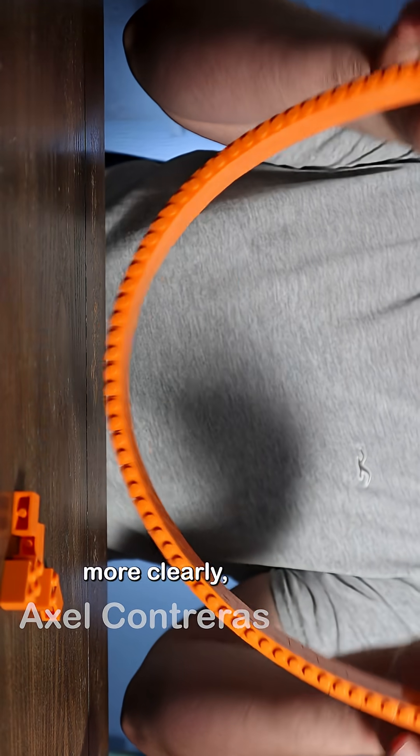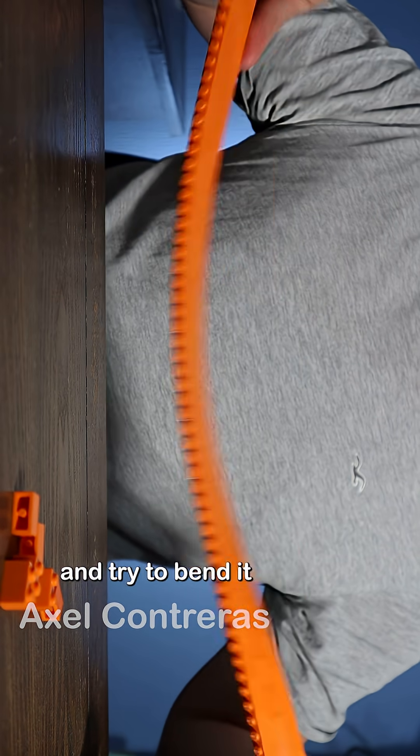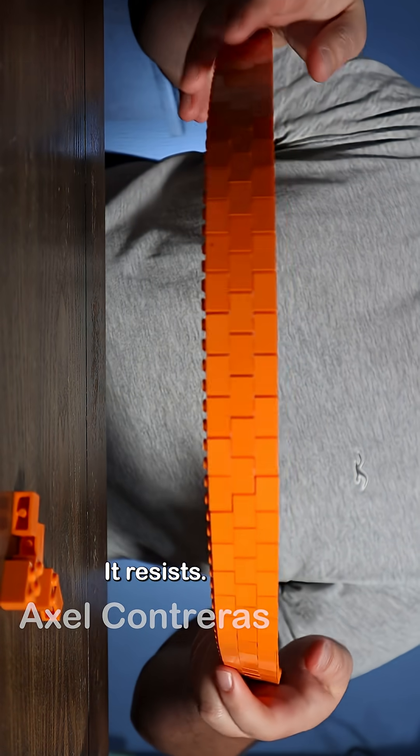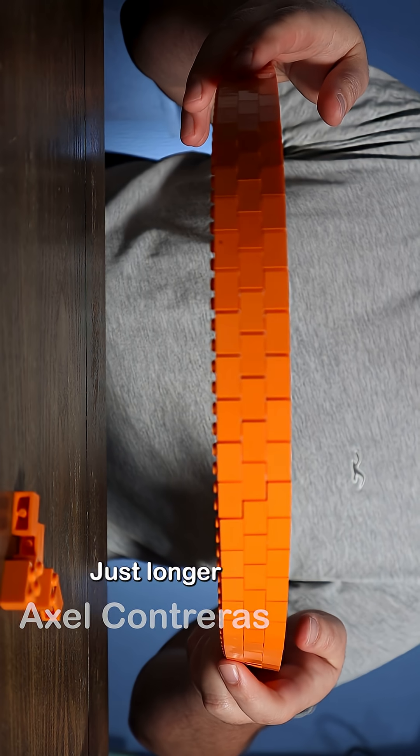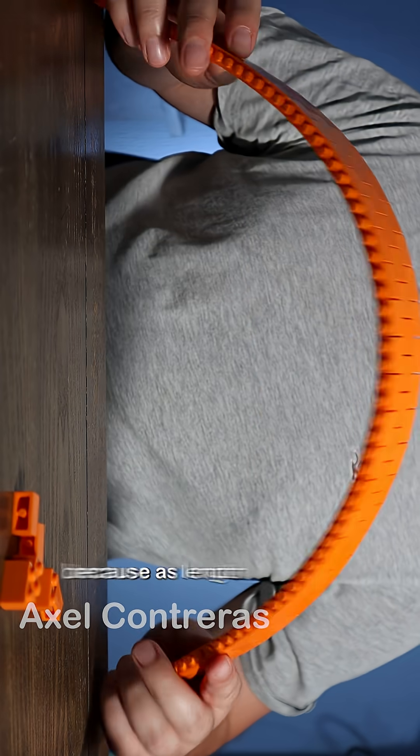And if you want to feel it more clearly, do the test. Take a short LEGO beam and try to bend it with your fingers. It resists. Now build one that's exactly the same, just longer—you'll notice how easily it curves.